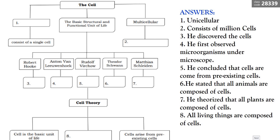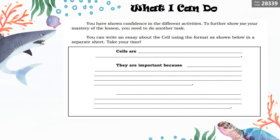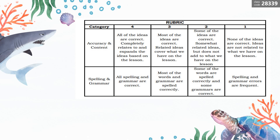For your assignment, you will write an essay about cells using the provided format. The rubric uses scores of 4, 3, 2, and 1, with criteria based on accuracy in content, spelling, and grammar.